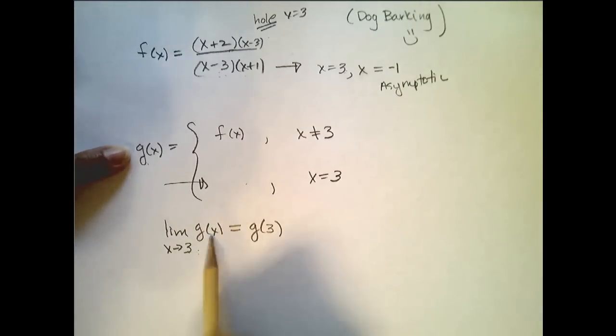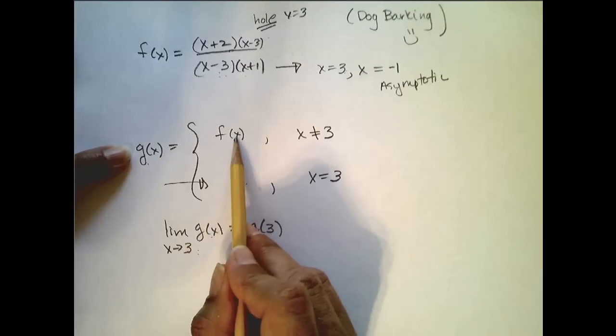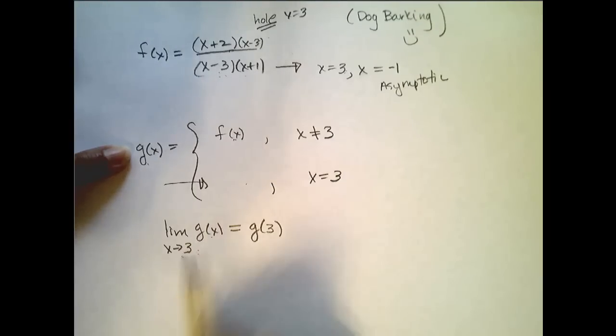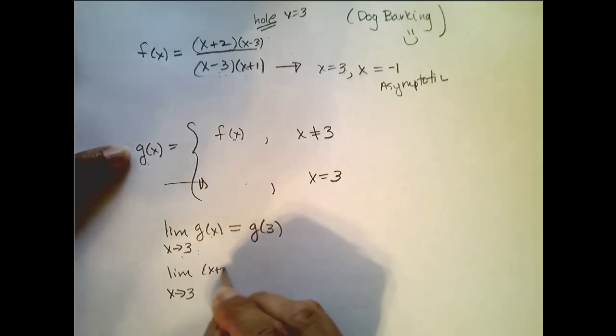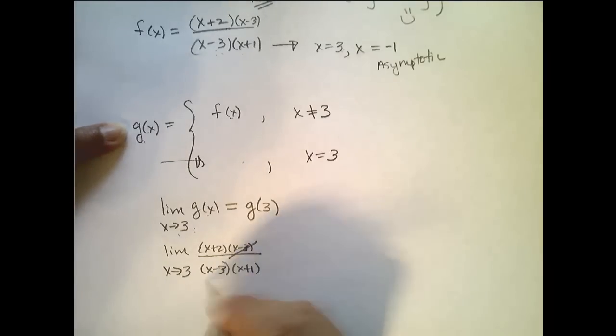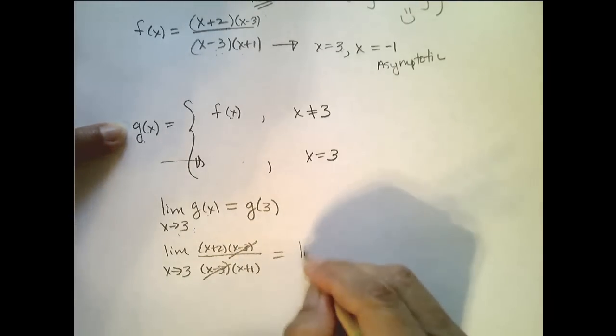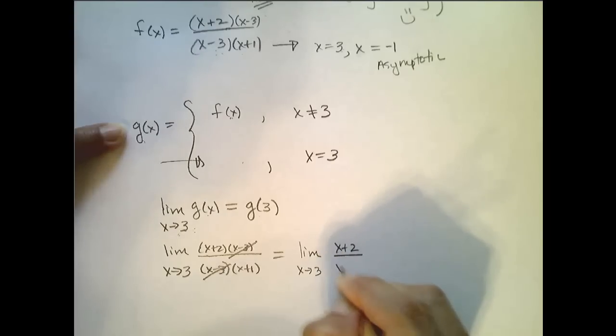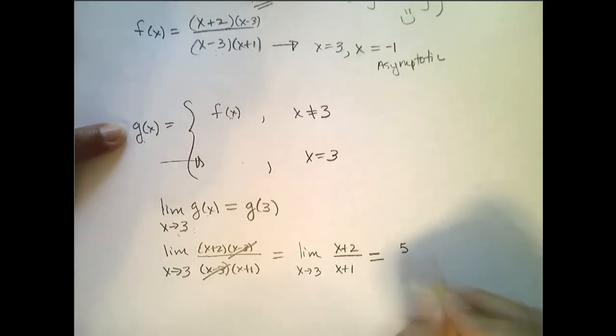So since g is defined the same way f is for all values away from 3, I replace this limit as x approaches 3 of (x+2)(x-3) over (x-3)(x+1). Remember, I can cancel these out when I'm looking at the limit. So this equals the limit as x goes to 3 of (x+2) over (x+1), which is, now I can do direct substitution, 5 fourths.